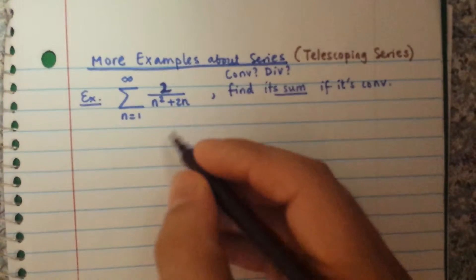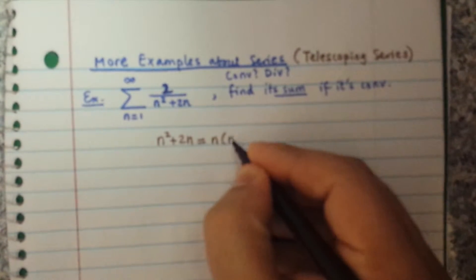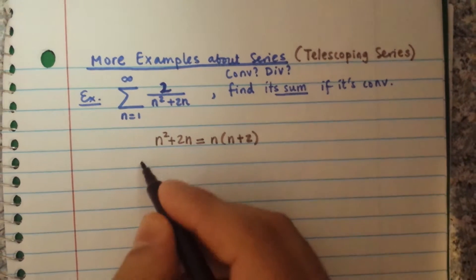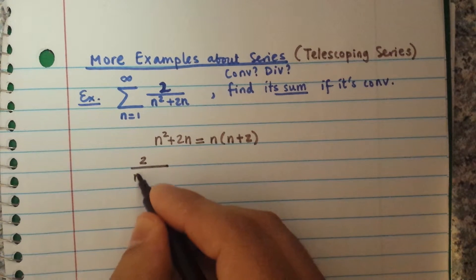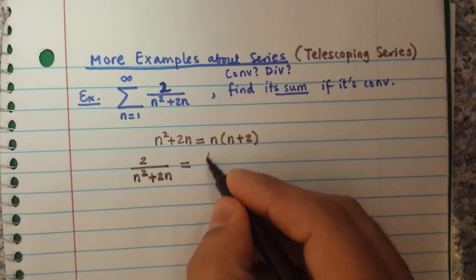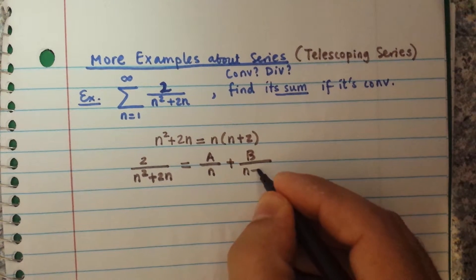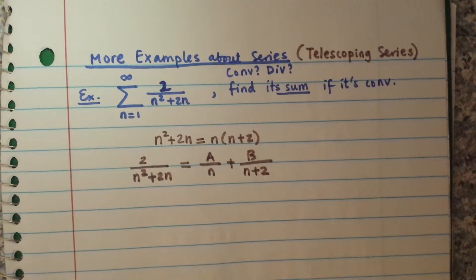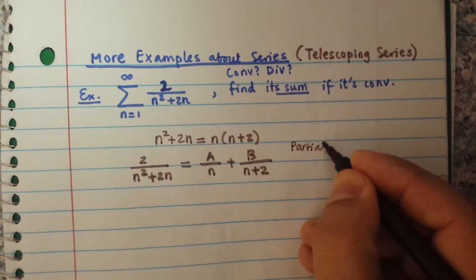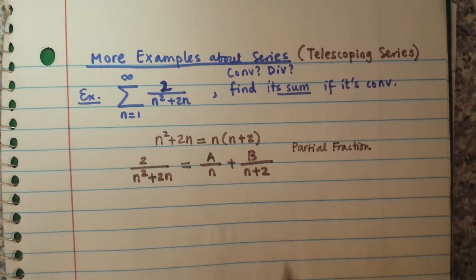First, you can see we have n squared plus 2n, which we can factor as n times (n plus 2). So if you have 2 over n squared plus 2n, you can write this as A over n plus B over (n plus 2). So we write down the partial fraction decomposition.